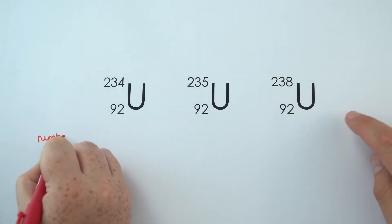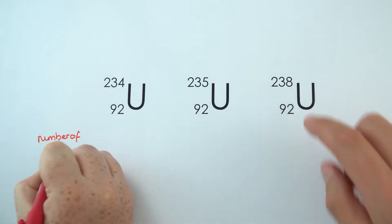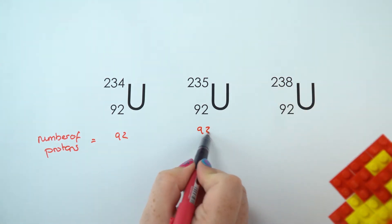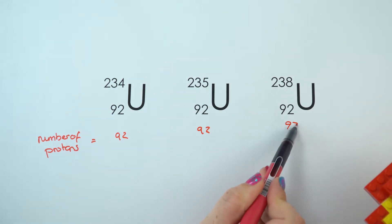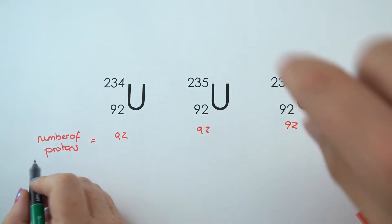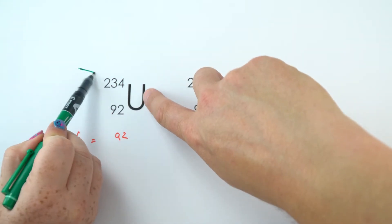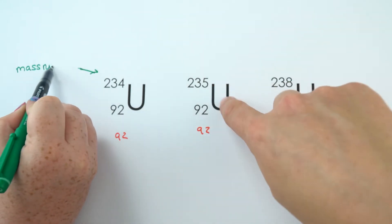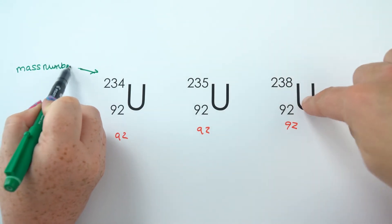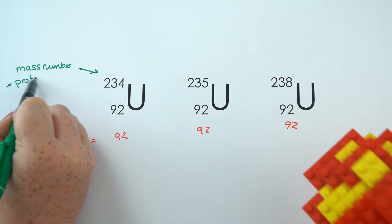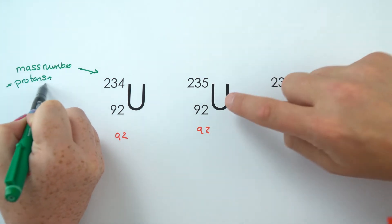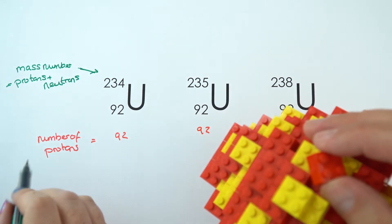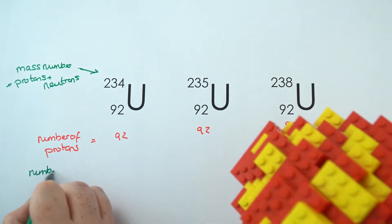Here are three more different isotopes. These ones are uranium, and uranium always has 92 protons in the nucleus, so we can see that it's pretty massive. The three we've got here are uranium-234, uranium-235, and uranium-238 — with an isotope we call it the name of the element followed by the number. Uranium-235, if it absorbs another neutron and becomes uranium-236, then splits apart — and that's where we have nuclear fission.